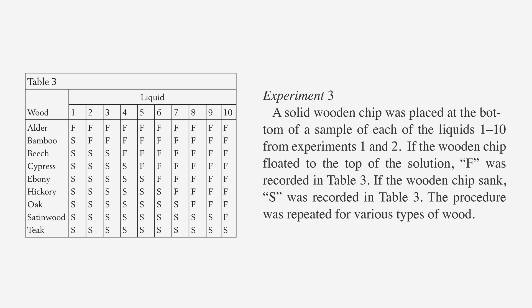Let's look at this passage about an experiment. A solid wooden chip was placed at the bottom of a sample of each of the liquids one to ten from experiments one and two. If the wooden chip floated to the top of the solution, F was recorded in table three. If the wooden chip sank, S was recorded in table three. The procedure was repeated for various types of wood.